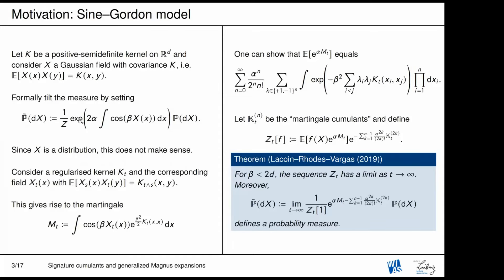This is a good description of a log gas in R^d. Depending on your choice of kernel, you can describe various models by transformations of this sort. The one problem is that since your kernel is very irregular at the diagonal, this random field x will actually be a distribution, so the integral inside the exponential doesn't make sense. This is where you have to renormalize — to make this definition precise, you regularize your kernel by introducing a convolution parameter t, which you would like to remove in the end.